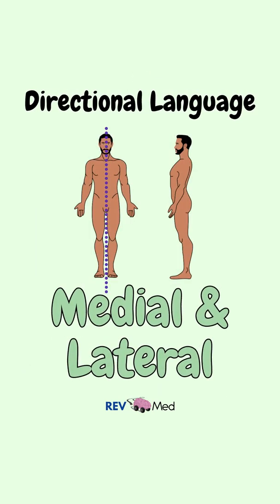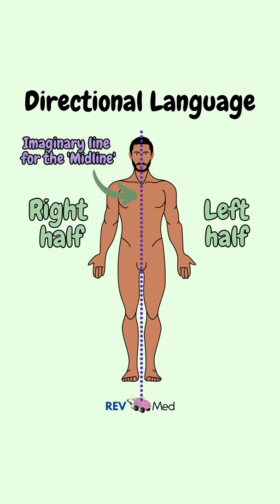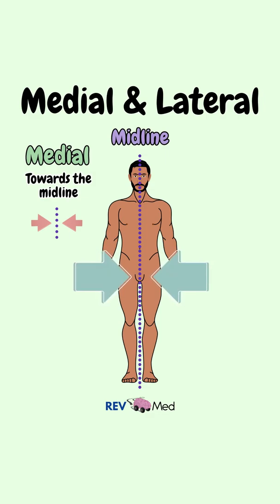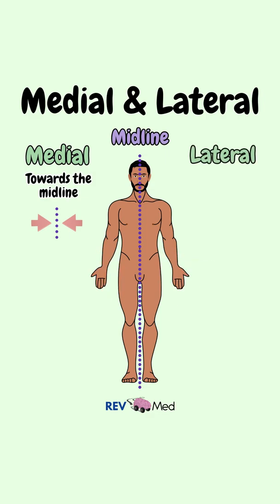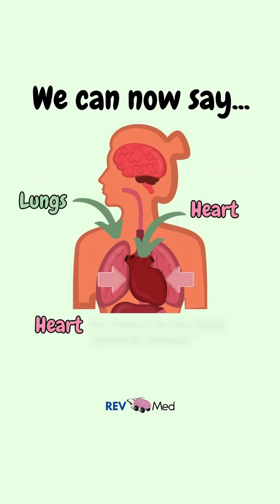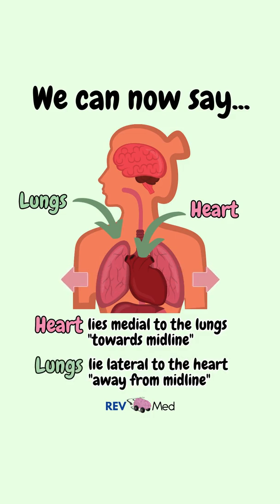Next we have the terms medial and lateral. To discuss this, we draw an imaginary line down the midline of our body, which divides the body into the right and left half. Medial means towards the midline of the body, and lateral means away from the midline and towards the side. So we can say the heart lies medial to the lungs, towards the midline, or the lungs lie lateral to the heart, away from the midline.